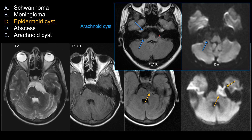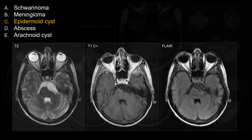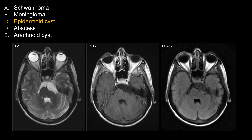Here is an example of an arachnoid cyst. The key feature is that it should follow CSF on all sequences — it should not enhance on T1-weighted sequence. On FLAIR, it should show complete suppression of CSF signal, just like CSF anywhere else — not the dirty FLAIR appearance seen with epidermoid. And it should not have restricted diffusion. That concludes this case.